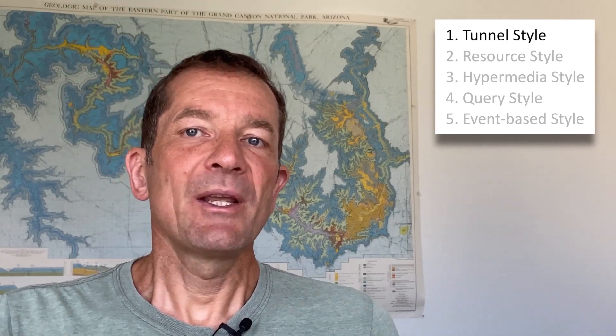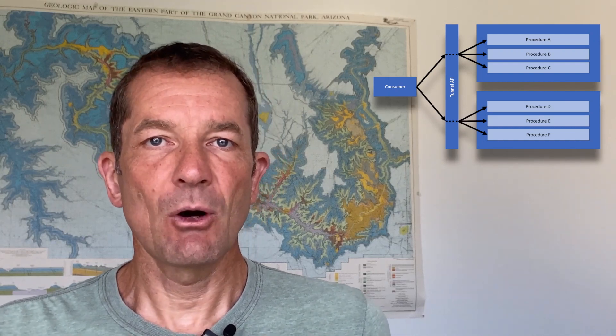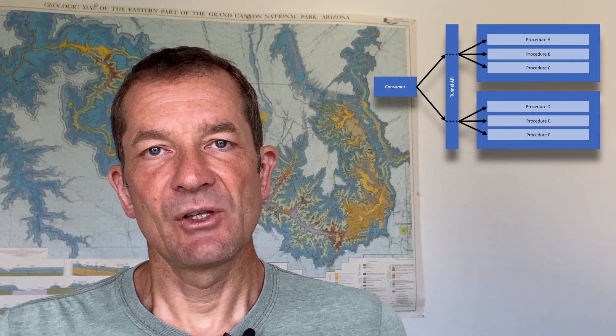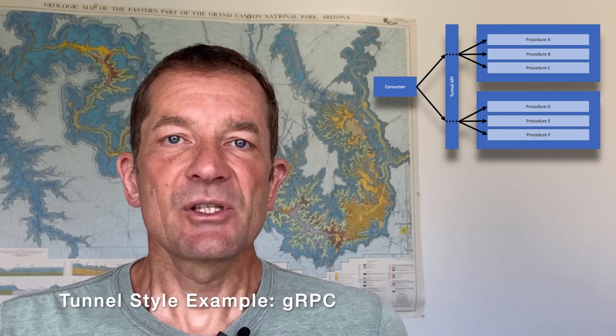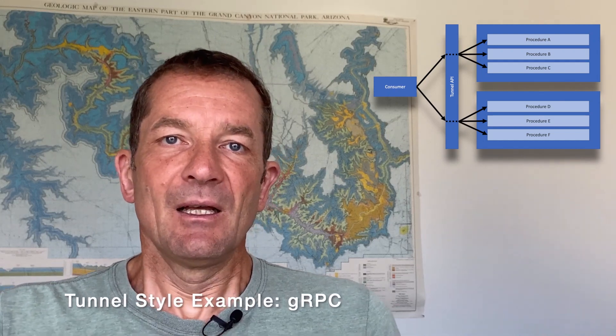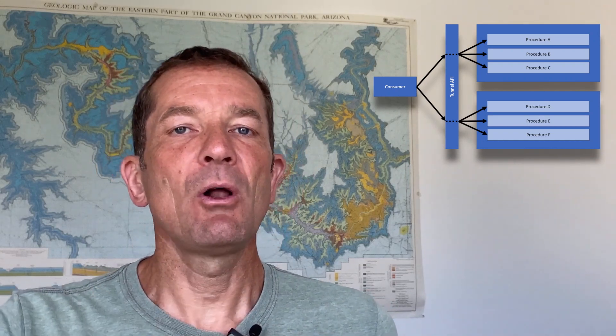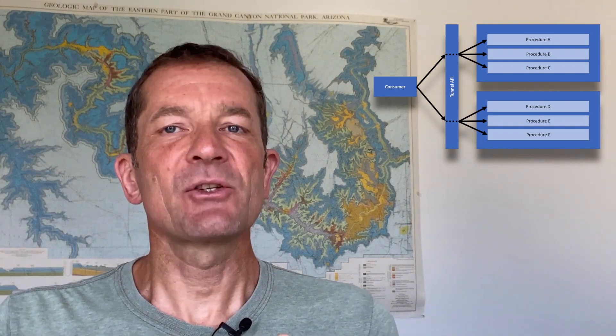The first one is called the tunnel style. You can think of that as knowing where you can get something and knowing what you can do there. It is a very old idea of how to do APIs, based on the idea of calling procedures — calling functions within computer programs — which is why people often refer to this as remote procedure call. A popular example where this style is used a lot nowadays is Google's gRPC. The tunnel style is really focused on being able to call functions that are available somewhere, making computer code available to the outside world.